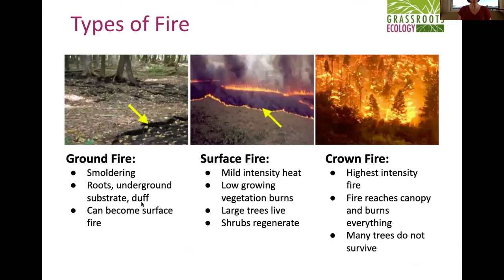Broadly, we have ground fires, which is literally when the ground substrate is burning — roots, dry duff, moss, even soil if it's dry enough. This is a smoldering, creeping, slow fire. Surface fires occur when low-growing vegetation is burning — grass, brush, and understory. It's a mild intensity heat normally, and large trees tend to do very well with this type of fire.